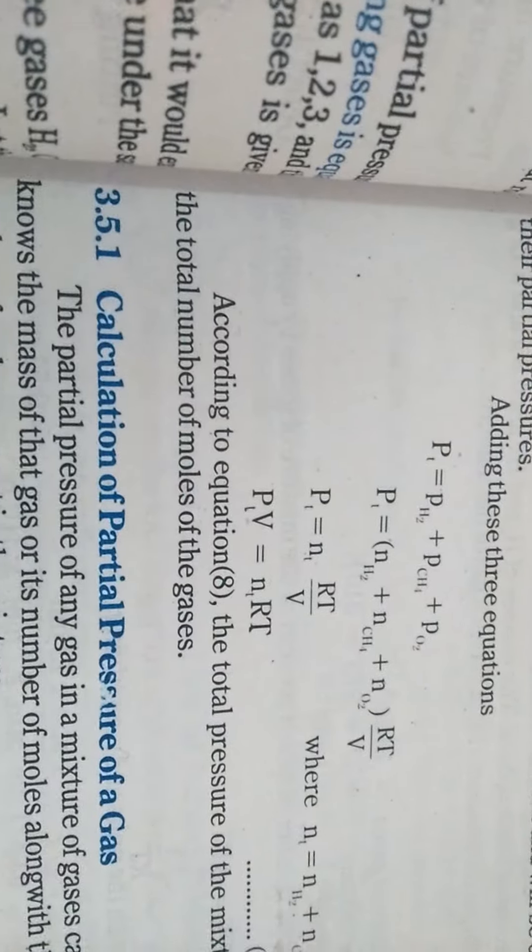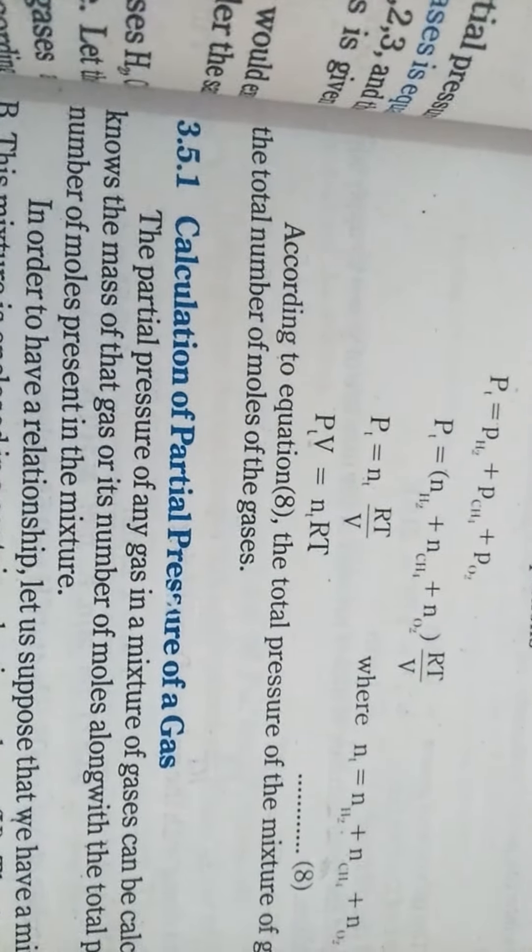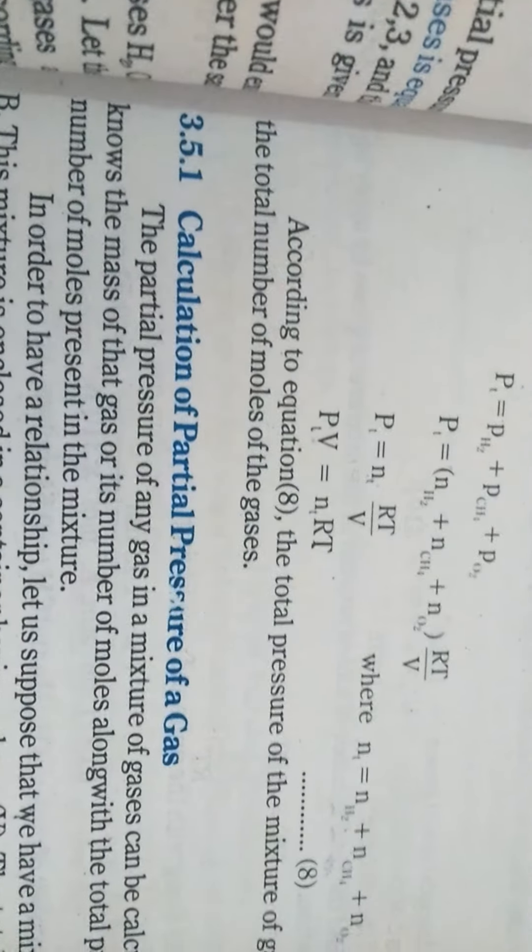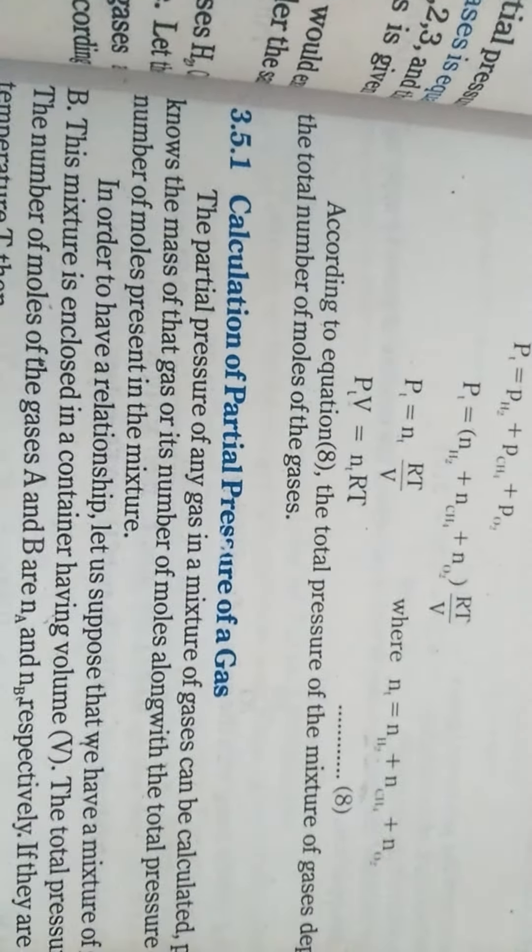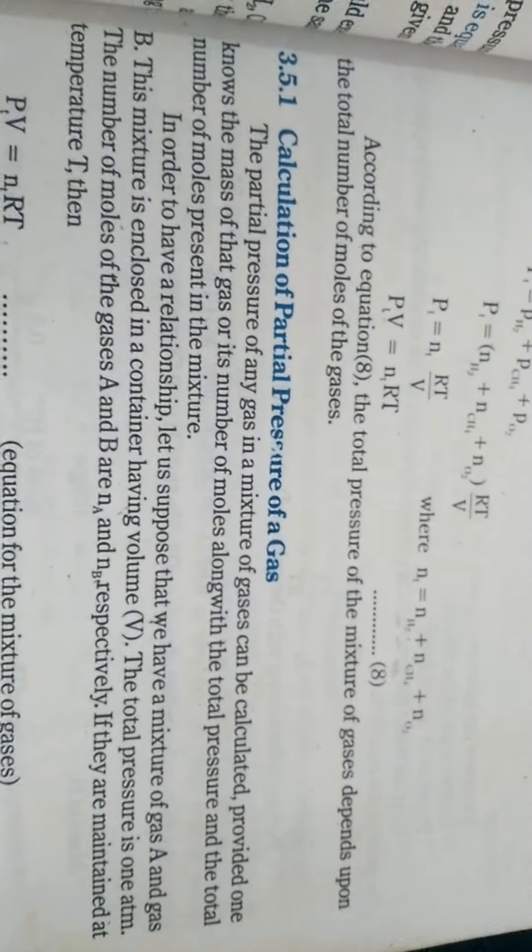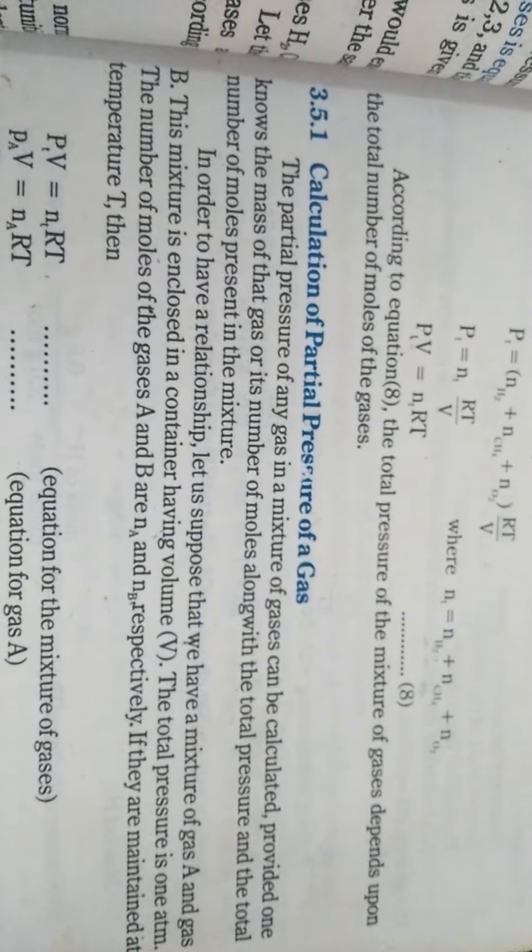Ab haam in sab ko jab add kar lete hai, then we get the total partial pressure aur jo equation humare paas aati hai, that is PTV is equals to NTRT and according to this equation, the total partial pressure of gases depends upon the total number of the moles of the gas.